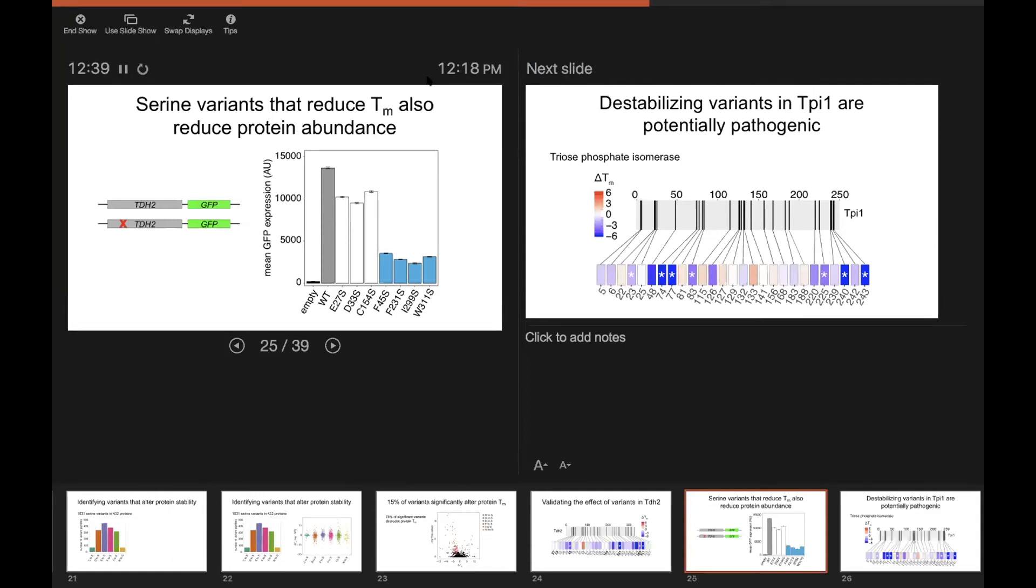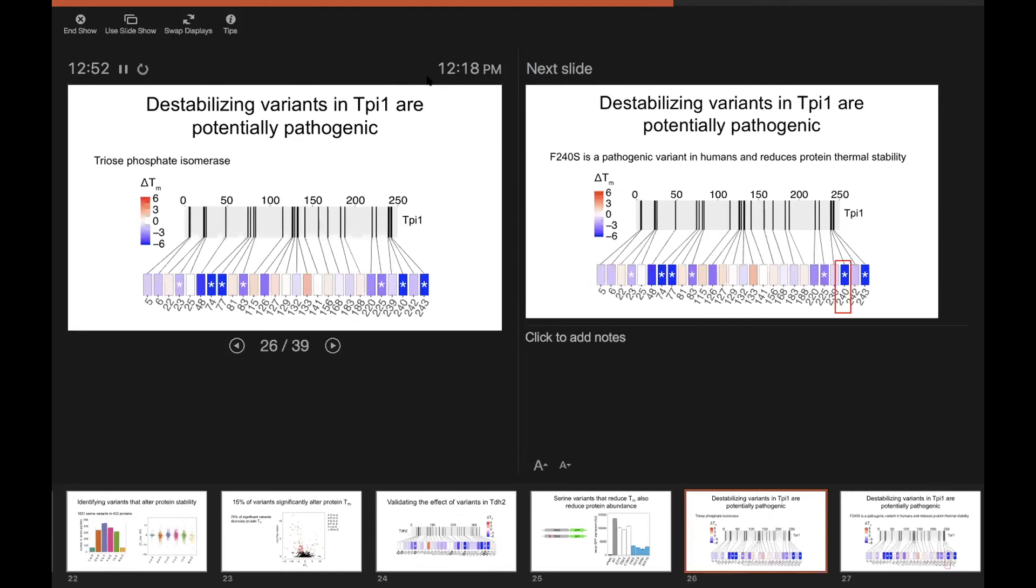So I don't have too much time, but I wanted to quickly just tell you about a couple of example proteins that we covered in our assay to sort of highlight the kinds of things that we think we can learn from our approach. So the first one is this protein TPI1, triose phosphate isomerase.